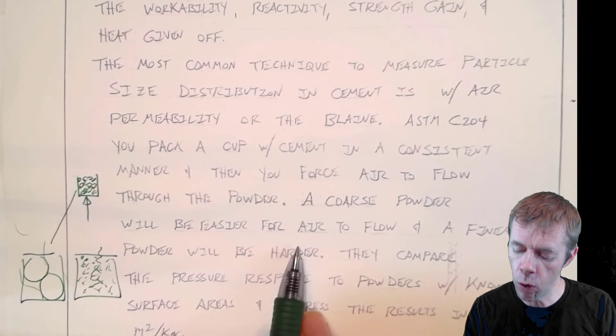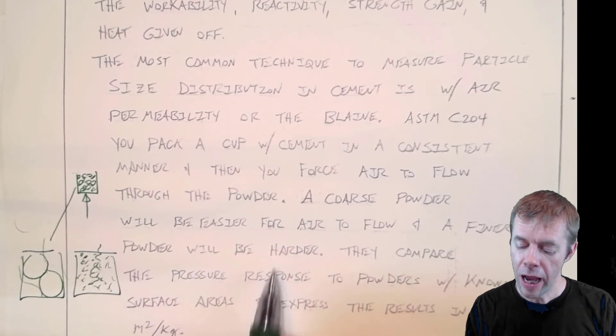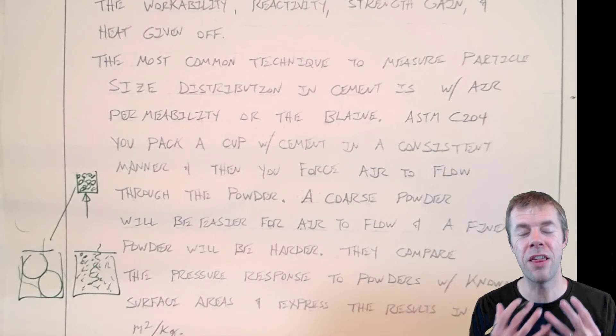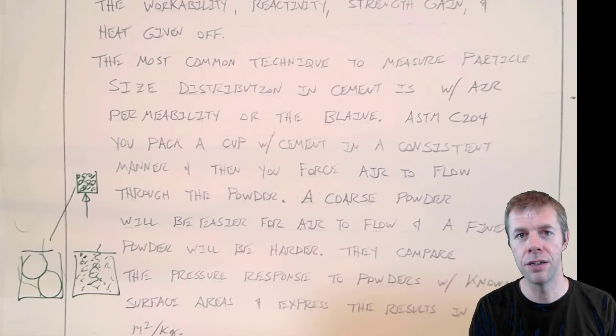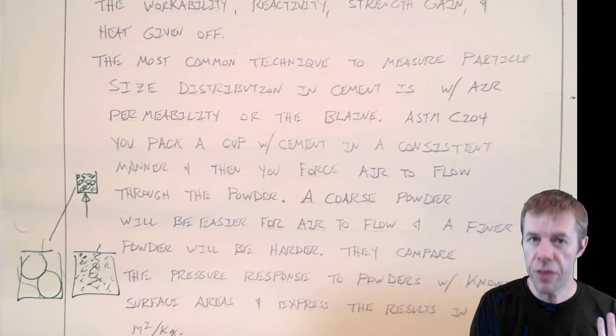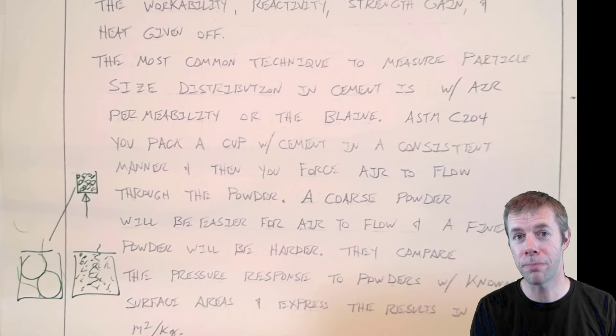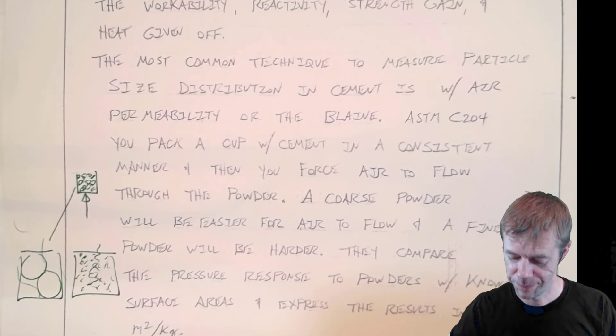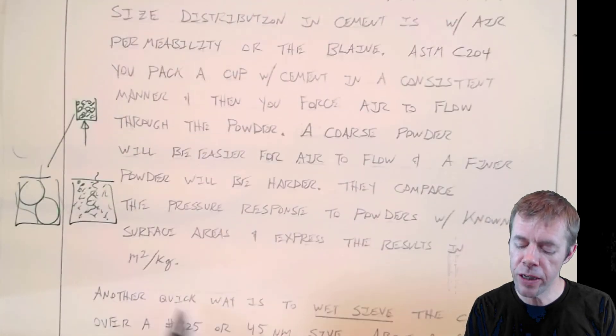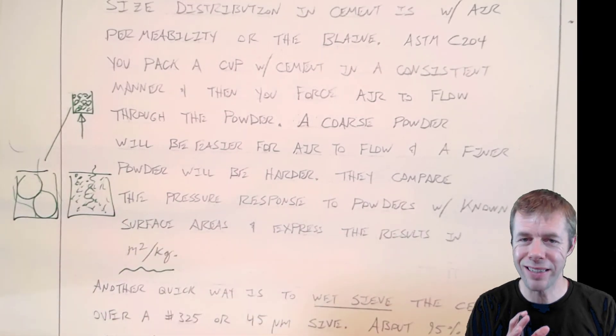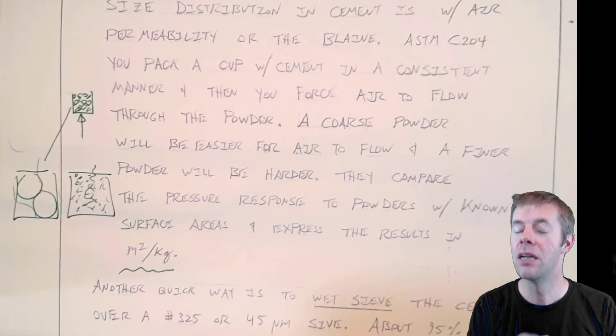A coarse powder is going to be easier for air to flow. A finer powder is going to be harder for the air to flow. Basically they compare this pressure response to powders of known surface areas. There were thousands of powders tested to compare how pressure change relates to surface area. It's pretty cool that you can just measure how fast the air goes through a packed bed and that tells you about particle size distribution. They express this in terms of meters squared per kilogram. Be a little wary of these units - they're not exactly perfect, they're an estimate.